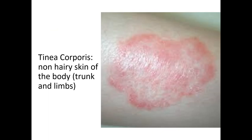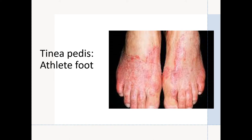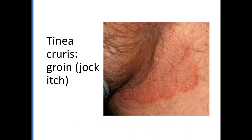Tinea corporis involves non-hairy skin of the body — that is trunk and limbs. Tinea pedis, also known as athlete's foot, occurs on the foot. Tinea cruris occurs in the groin, also known as jock itch or dhobi itch.